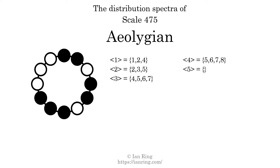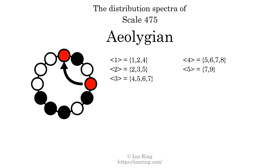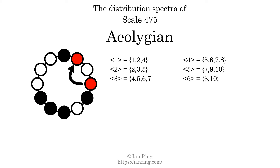The generic interval of five scale steps comes in three different specific interval sizes: seven semitones, nine semitones, and ten semitones. The spectrum width of this generic interval is three. And finally, the generic interval of six scale steps comes in three different specific interval sizes: eight semitones, ten semitones, and eleven semitones. The spectrum width of this generic interval is three.